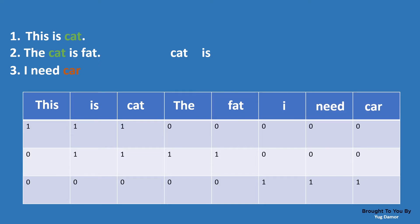Now the next step is to convert each sentence into numerical form. For that, we check each unique word and see if it is present in a given sentence. If it is present, we put one; if not, we put zero. For example, 'this' is in the first sentence so we put one, 'is' is present so we put one, 'cat' is present so we put one, but 'the' is not present so we put zero, and all other missing words are also zero. This is how we represent a sentence in numerical form.